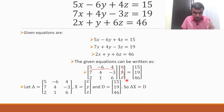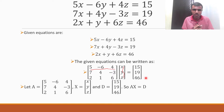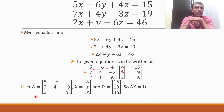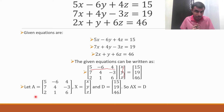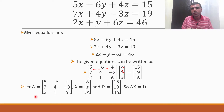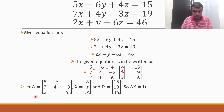So A is the coefficient matrix, X is the variable matrix, and D is the RHS matrix. Now I will apply the matrix inversion method. For that, I need to check that the determinant of A is not zero.